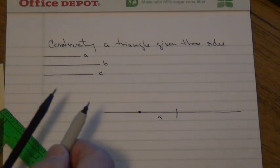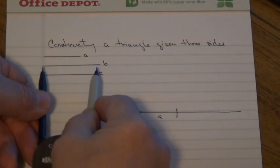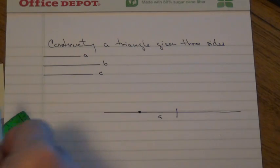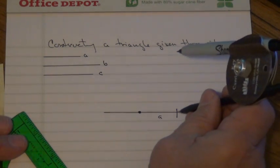Then I'm going to take B, the length of B, and from either point just draw an arc.